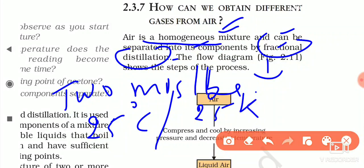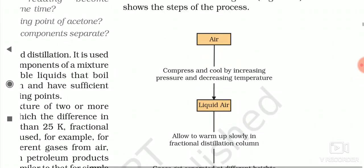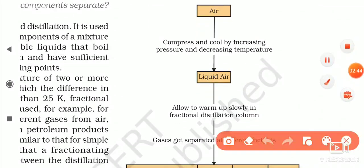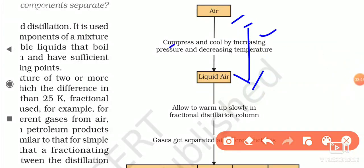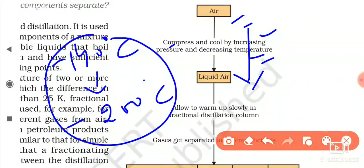In the case of air, to obtain different gases we use fractional distillation. The flow diagram shows the steps of the process. First, we convert air into liquid air by increasing pressure and decreasing temperature to at least around minus 140°C to minus 200°C. We need this much temperature to change air into liquid air.